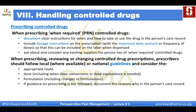When prescribing PRN controlled drugs, document clear instructions for when and how to take or use the drug, include dosage instructions with maximum daily amount and frequency, and ask about and consider any existing supplies. When prescribing, reviewing, or changing a controlled drug prescription, prescribers should follow local or national guidelines, consider the appropriate route, dose, and formulation, and if guidance is not followed, document the reason in the person's care record.